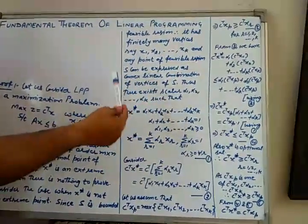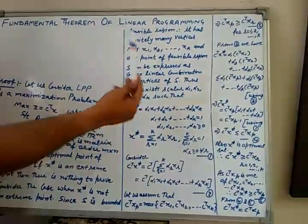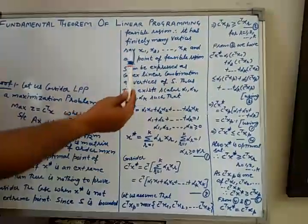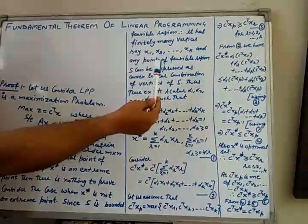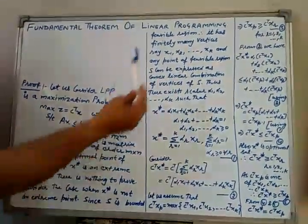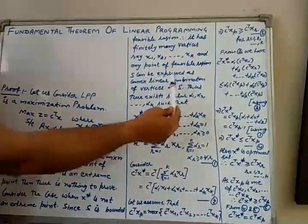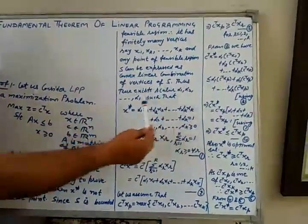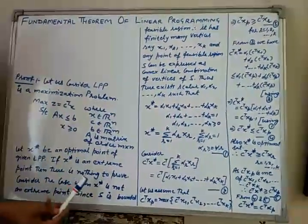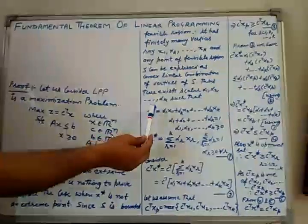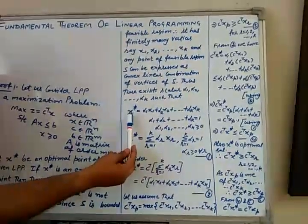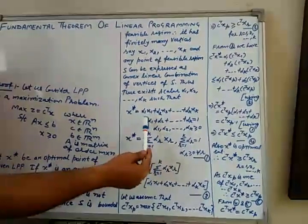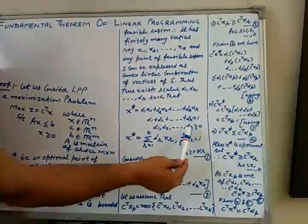Convex linear combination has been discussed in the video on convex sets and properties. Since the feasible region is bounded, there exist scalars α1, α2, ..., αk such that X*, which we take as not an extreme point, can be written as a convex linear combination of these vertices: X* = α1·X1 + α2·X2 + ... + αk·Xk, where the sum of all scalars equals 1 and all scalars are non-negative.